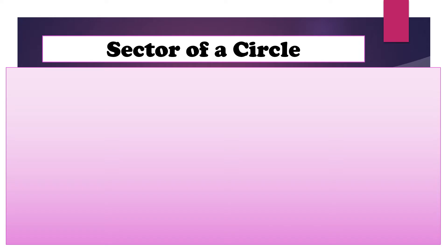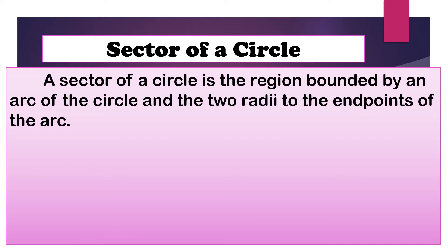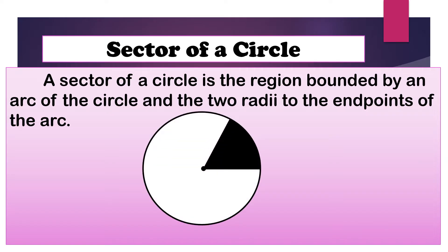Let us define first the sector of a circle. A sector of a circle is the region bounded by an arc of the circle and the two radii to the endpoints of the arc. This is now the illustration of the sector of the circle. We have here the circle and the shaded region is what we call the sector of the circle, wherein it is bounded by an arc and the two radii of the circle.